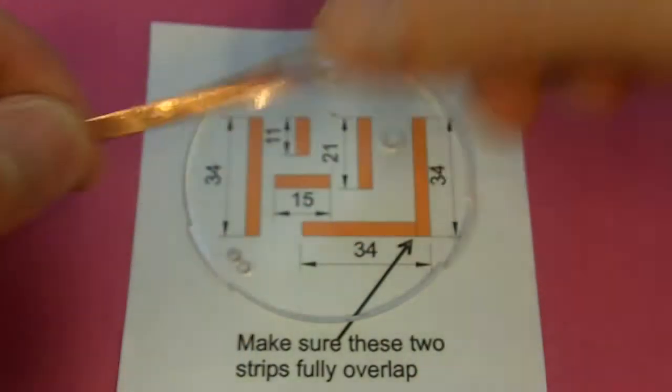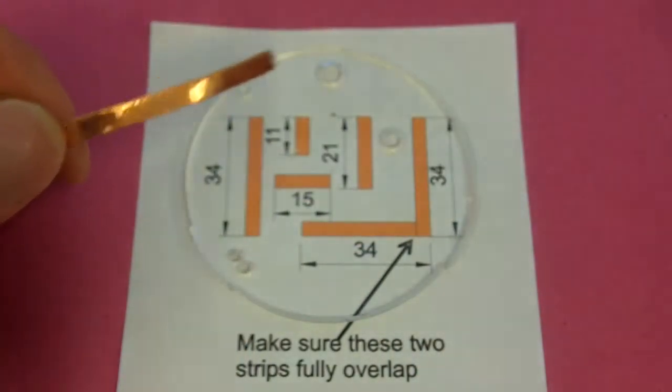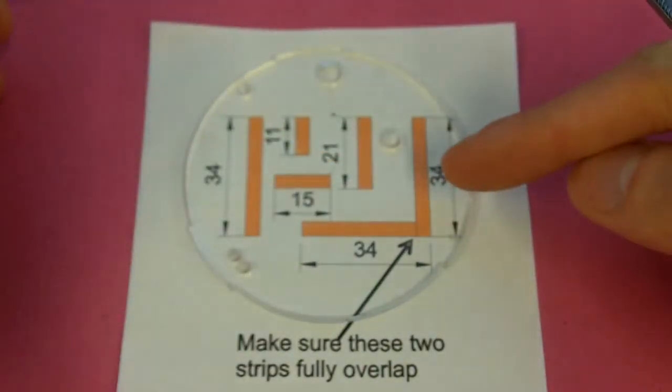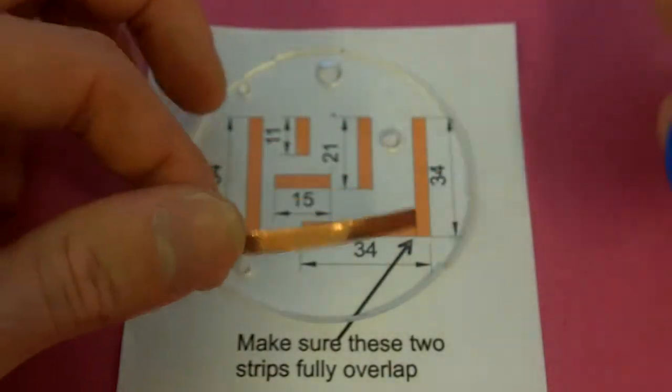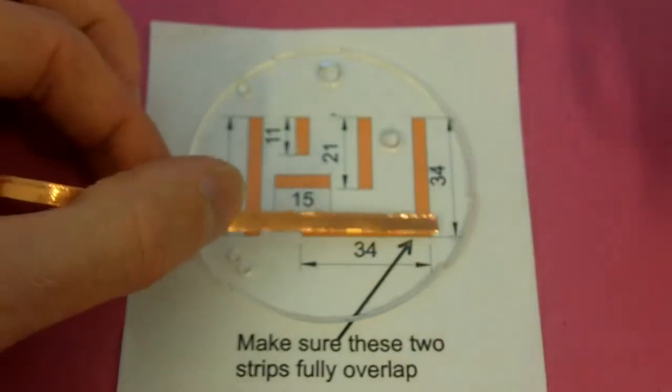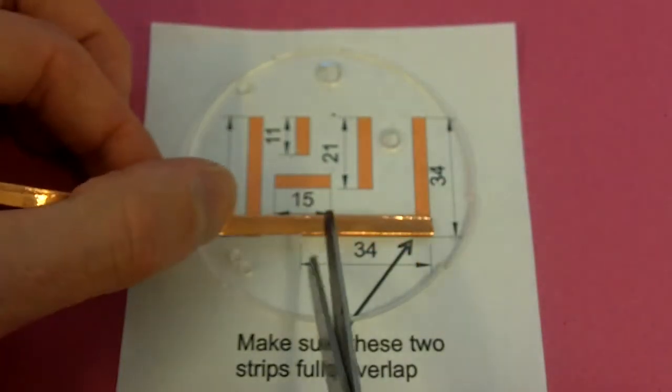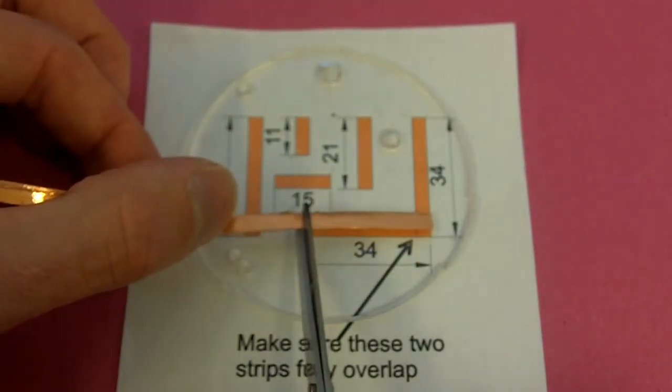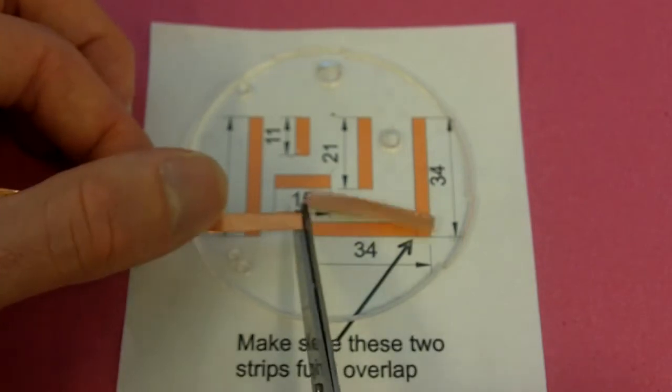What you need to do with this copper tape - everywhere there's orange, it needs to be some of the copper tape. The best way to do this is to line the copper tape up and just put your scissors underneath, give it a quick snip.